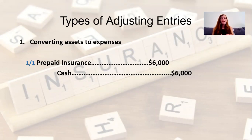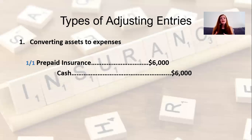Let me show you that in the example. On January 1st, let's say I paid $6,000 in cash for an insurance policy covering the next six months. That means each month it's costing me $1,000 for insurance — $6,000 divided by six months. So we decreased cash with a credit, and we increased the asset of prepaid insurance with a debit, because as of right now I have not used up any of that insurance. I've paid it ahead of time.